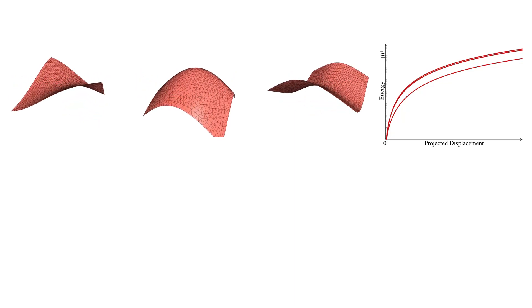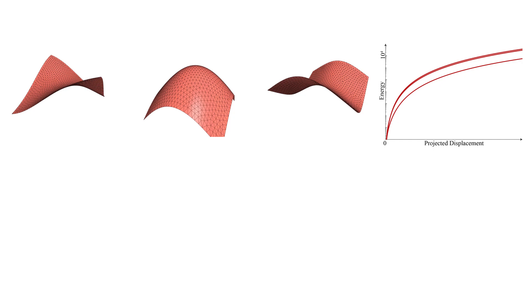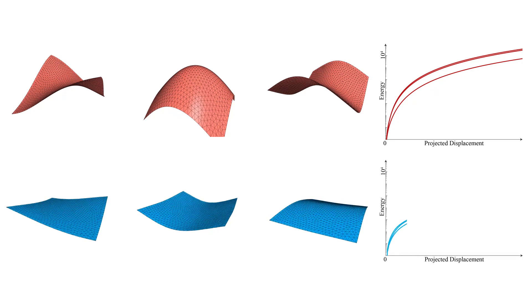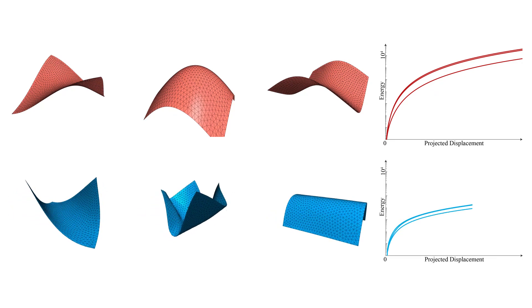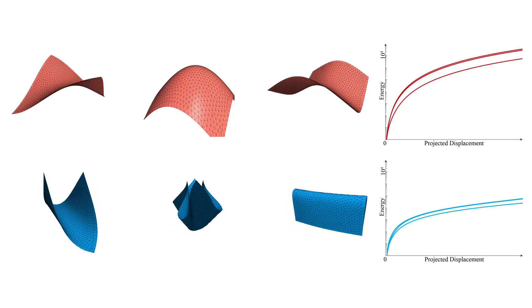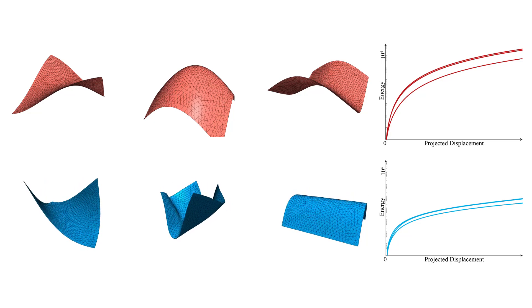While linear eigenmodes capture the compliant directions for small displacements, they quickly divert into states of unrealistically high energy for larger deformations. Instead of constraining the entire structure to deform along a given eigenmode, our method only prescribes the projection of the system's state onto the linear mode. All other degrees of freedom follow through energy minimization in the orthogonal subspace.